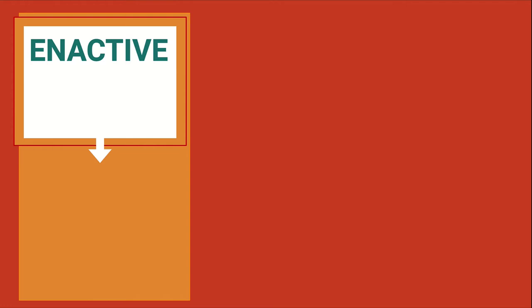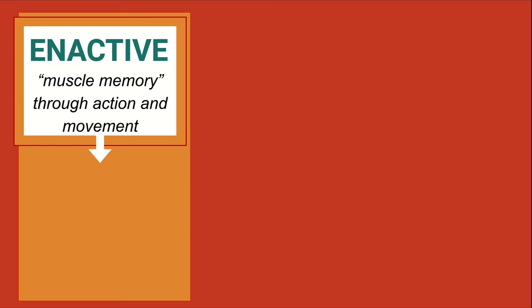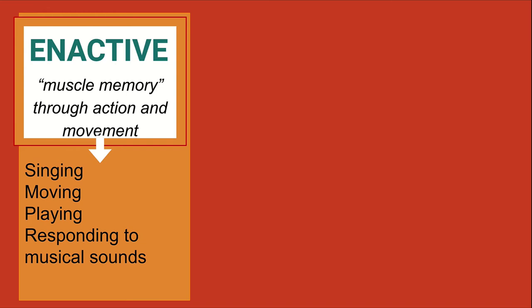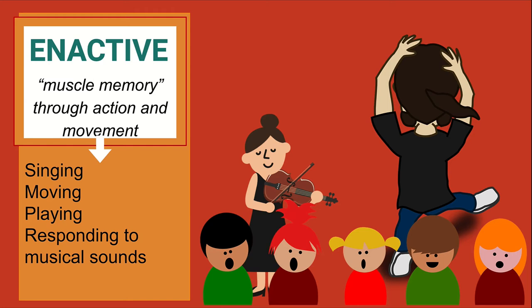The first mode of understanding is enactive — notice that it is spelled with an 'e', not inactive as in you're not active, but enactive, meaning muscle memory or through action and movement. The enactive mode of understanding applied to music means that we are looking at demonstrating our knowledge of music through music skills such as singing, moving, and playing instruments.